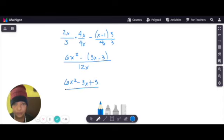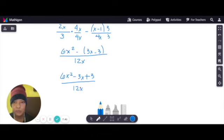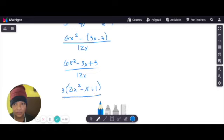Over 12x. We can factor this out. 3, 3 po ang common factor. That is 2x squared minus x plus 1. Can you still factor that out? Yan po yung factor. Over, common sa kanila 3 din. 4x.